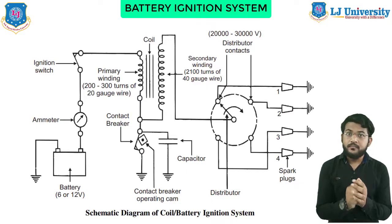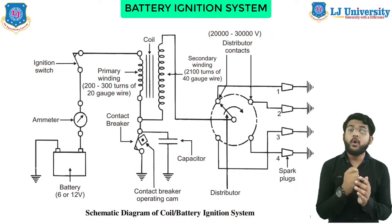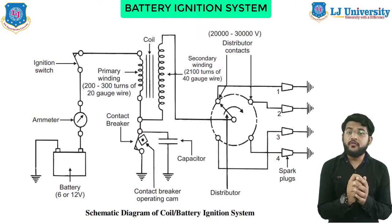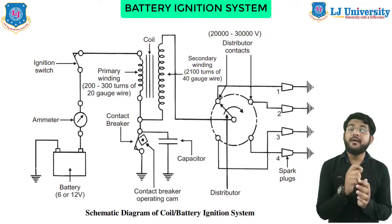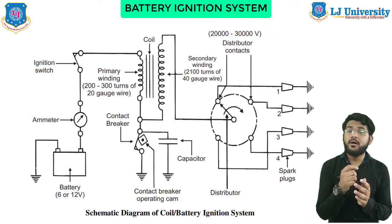For the working: when the ignition switch is closed and the engine is cranked, as soon as the contact breaker closes, a low voltage current flows through the primary winding. The contact breaker cam opens and closes the circuit four times per revolution for a four-cylinder engine. When the contact breaker opens, the magnetic field begins to collapse. Because of this collapsing magnetic field, current is induced in the secondary winding — whenever the contact breaks, current flows through the secondary winding.